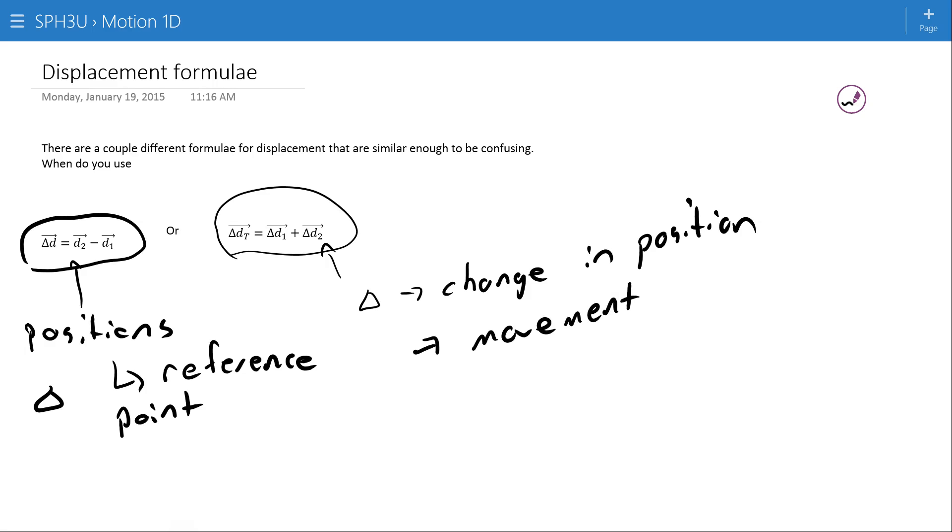The delta refers to change in position or movement. And so what we're doing here is we're taking like a path that's followed here, then maybe this person went up here and then they went down here. And we're totaling that into the net result, which would be like this below part right here.